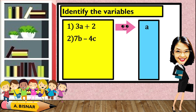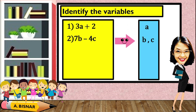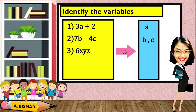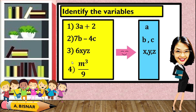Another example: 7b minus 4c. The variables here will be b and c. Another: 6xyz. The variables will be x, y, and z. And for the last one, m cubed over 9 — the variable will be m. It's very easy, right?